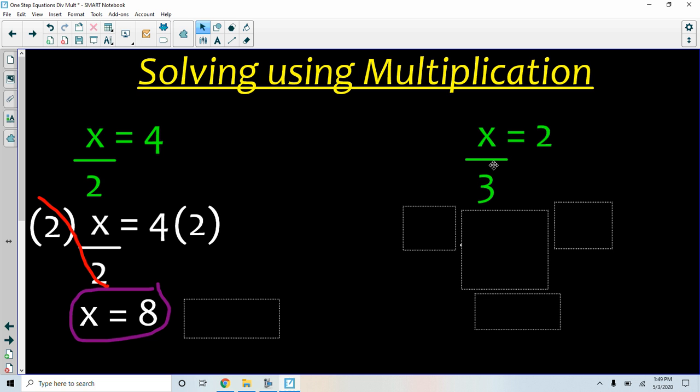In this problem, I'm dividing x by 3, so I need to multiply by 3. I'm going to rewrite my equation, and then I'm going to show you that I'm multiplying by 3. I use parentheses to show multiplication.